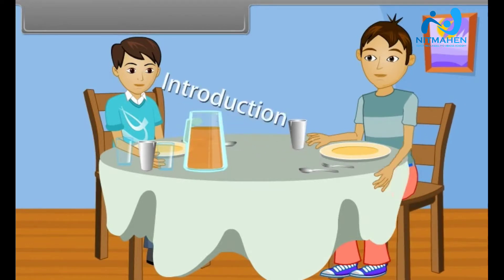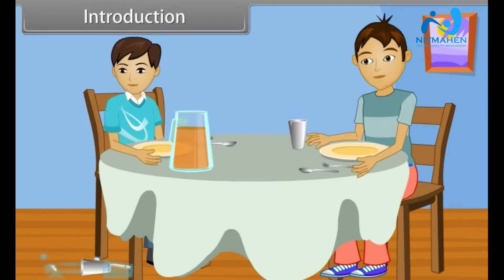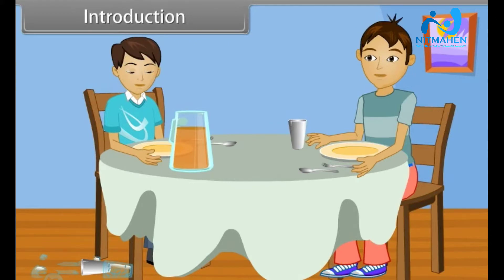Introduction. Today, Ram and Vicky are sitting at the dining table and waiting for dinner. Ram asked Vicky to pass the juice jar to him. But by mistake, Vicky hits some utensils and they fall down on the floor. Some of them were broken and some of them remain same. Then Vicky asked Ram, why glass utensils are broken and steel utensils remain unaffected? Why is it so?